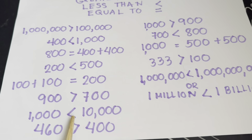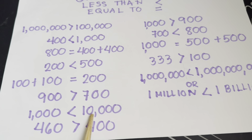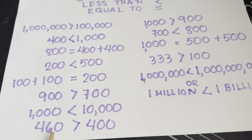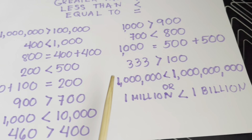One thousand is less than ten thousand. Four hundred sixty is greater than four hundred.